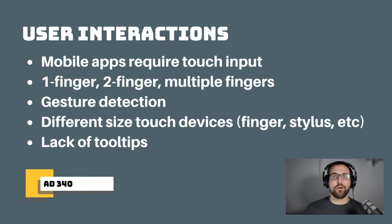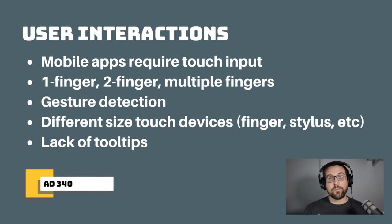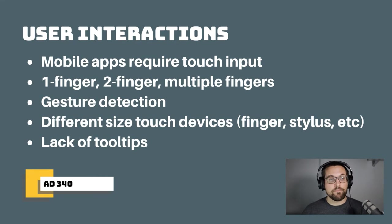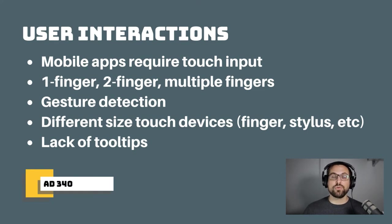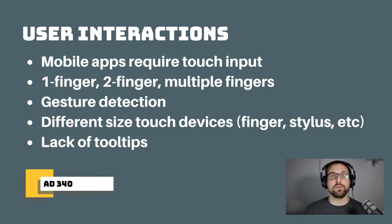We have different touch inputs — my finger touching the screen might be a different size than your finger, which might be a different size than a stylus, and we have to recognize all of those. Another interesting thing is that in a mobile app, we don't generally have tool tips or a mouse to highlight things and give hints about what a button might do. So we have to build really intuitive UIs that guide users into common interactions and functionality.